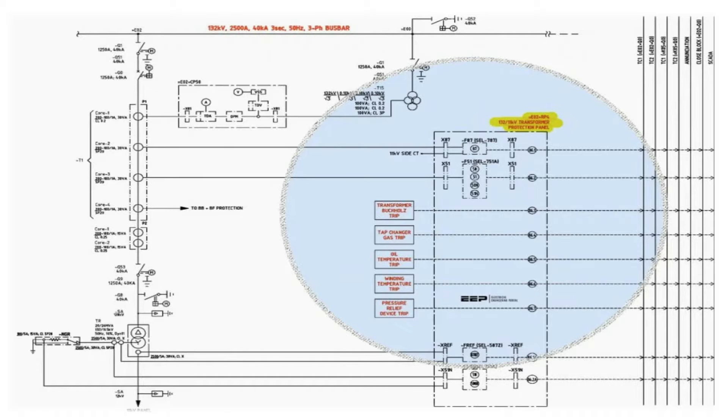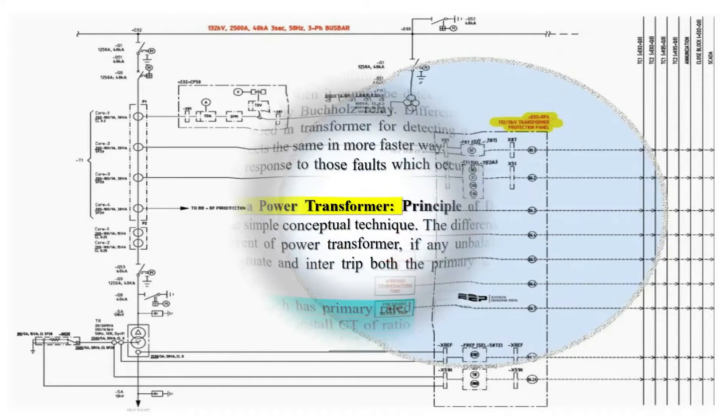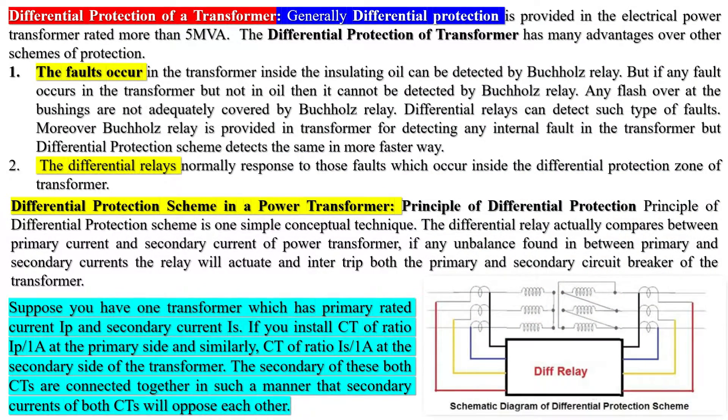The concept of in-zone faults and out-of-zone faults is employed to differentiate between fault types. Specifically, out-of-zone faults — also known as through faults — require the differential protection scheme to remain stable, meaning it should not operate during through fault conditions.